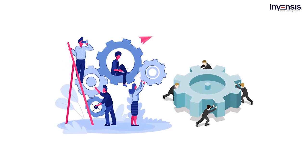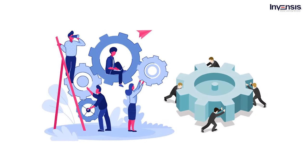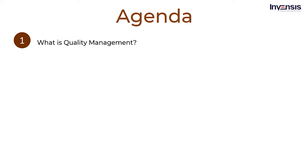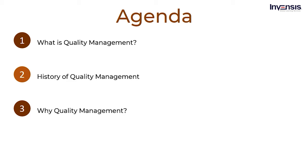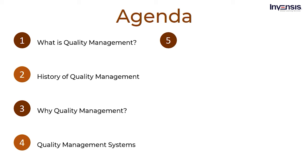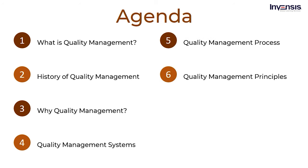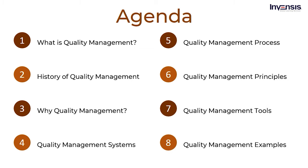Why not we talk about quality management today and explore its basic terms. Now let us go through the agenda first. We shall discuss what is quality management, then take a look into the history of quality management, then learn why quality management, then understand quality management systems, then look into quality management process, followed by quality management principles, quality management tools, and end the session by discussing quality management examples. So let us start our session today without any delay.